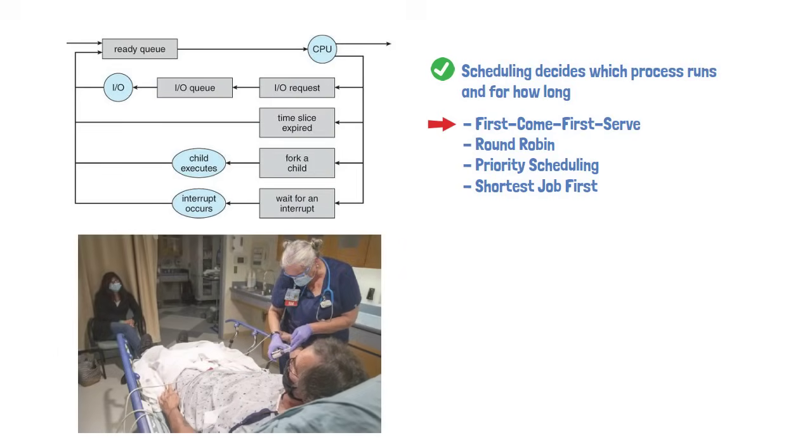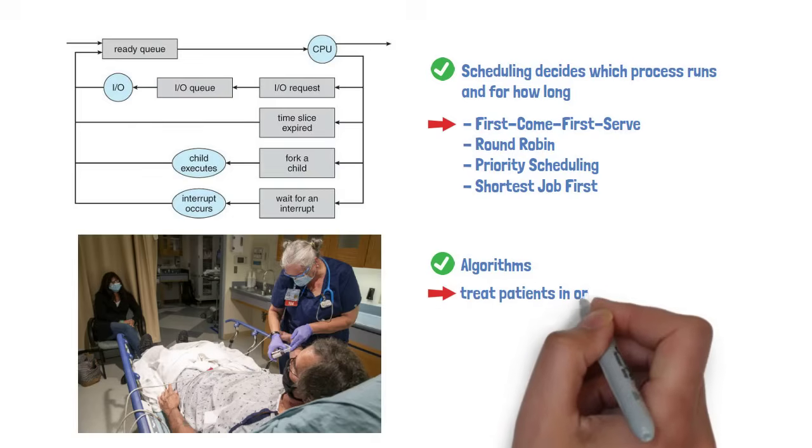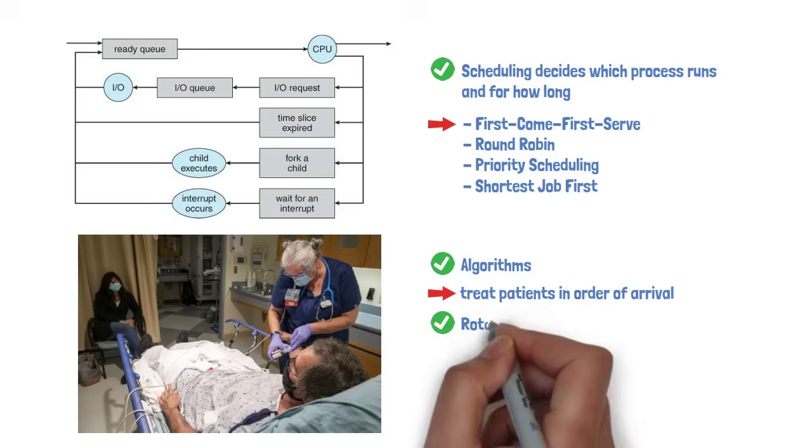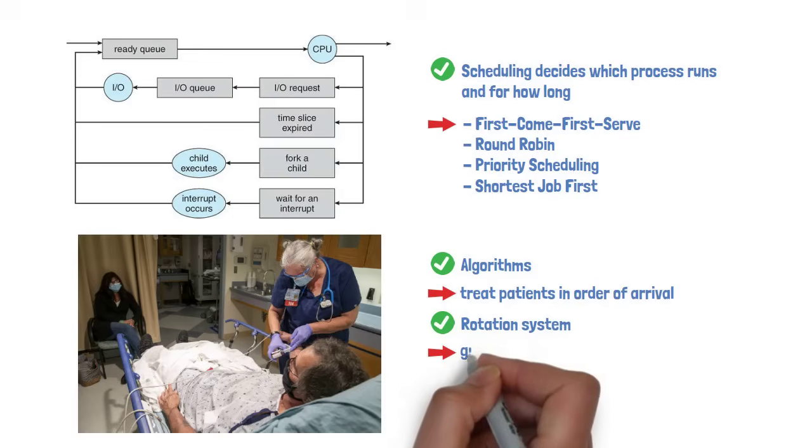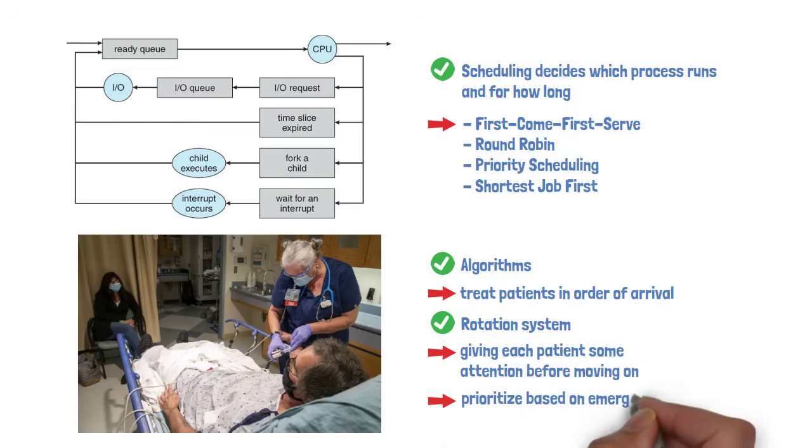Think of it like managing patients in an emergency room. Some algorithms would treat patients in order of arrival. Others might use a rotation system, giving each patient some attention before moving on, while others prioritize based on emergency severity or estimated treatment time.